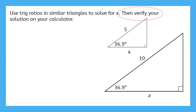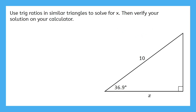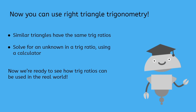Let's try that same problem using an algebraic expression on our calculator. For the second method, pretend you don't have this triangle here to refer to. Can you still get 8 as a solution? Pause the video now, set up an equation, then type that expression for x into your calculator. Check that your equation is set up correctly, then we multiply both sides by 10. Type the expression 10 times the cosine of 36.9 into the calculator and get 8. Note that if you didn't get exactly 8, that's because 36.9 was rounded a little bit. Now you can use right triangle trigonometry. We learned that similar triangles have the same trig ratios and how to solve for an unknown in a trig ratio using a calculator.